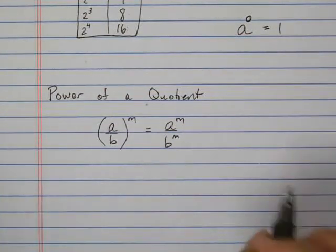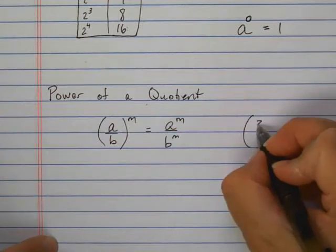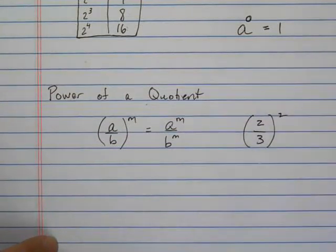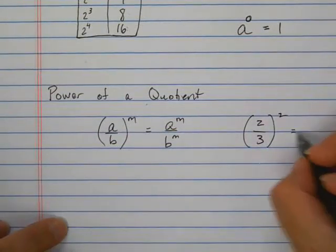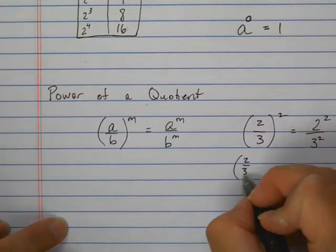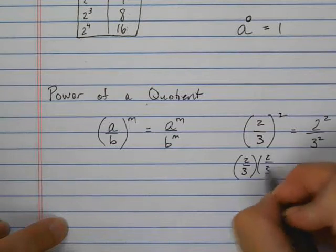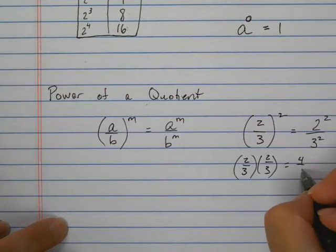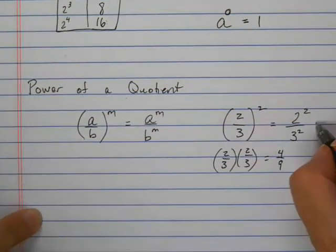So for instance, if I had 2 thirds squared, I would say that's the same thing as 2 squared over 3 squared. And the reason why that's the case is because this is 2 thirds times 2 thirds, which will be 4 ninths, the same that this would be 4 ninths.